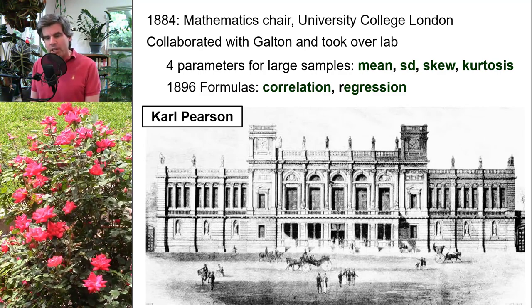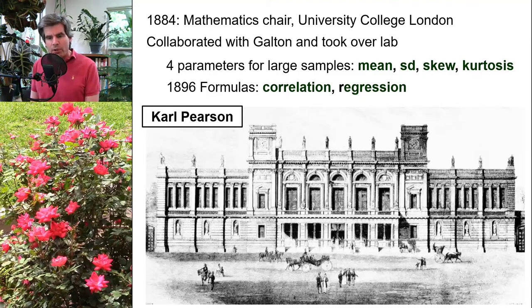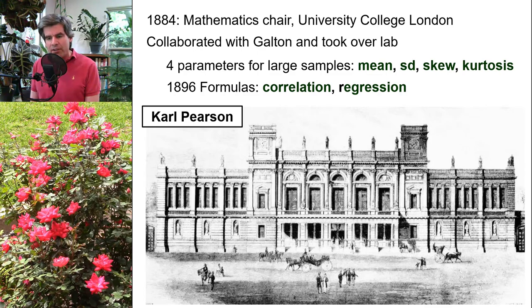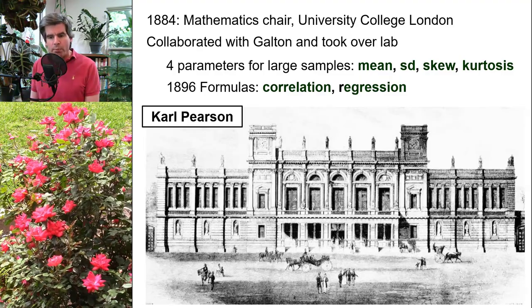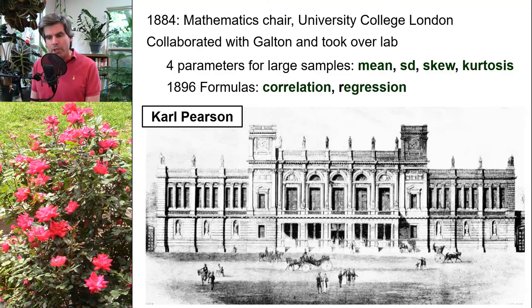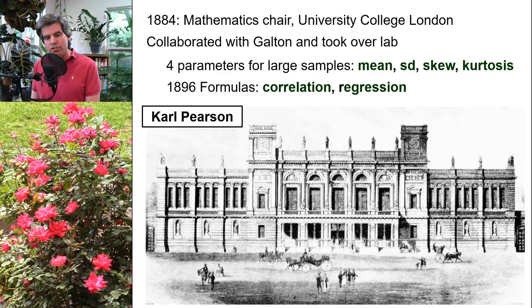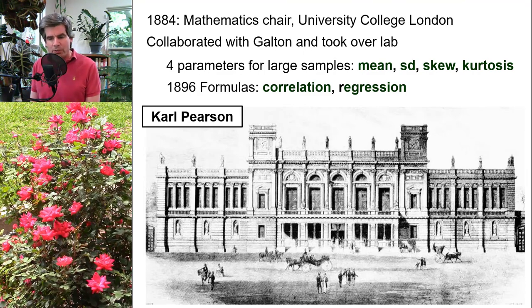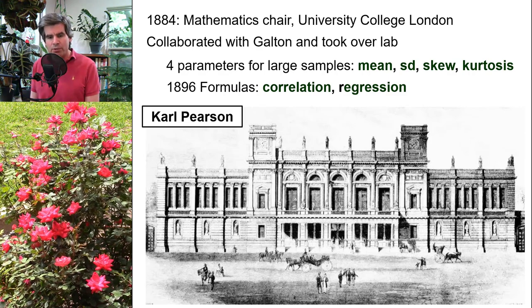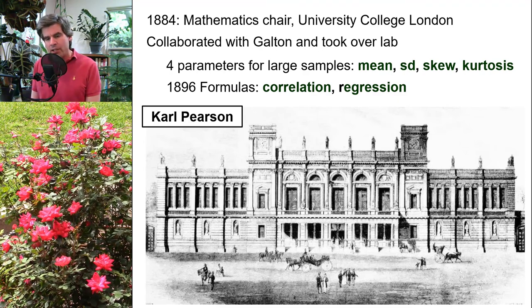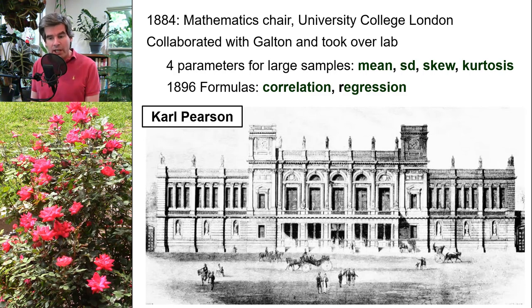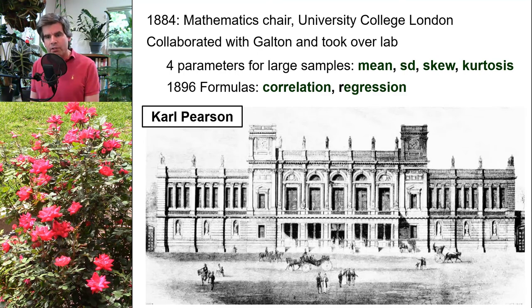For example, Pearson developed a theory that if you collect scores from a large number of people, the distribution of those scores can be described using four parameters: the mean, the standard deviation, the skew (the extent to which the distribution is symmetrical), and the kurtosis (the flatness or steepness of the distribution curve). He developed formulas for calculating each of those parameters, and later in 1896 he developed the formulas we use today for calculating a correlation and for calculating regression.